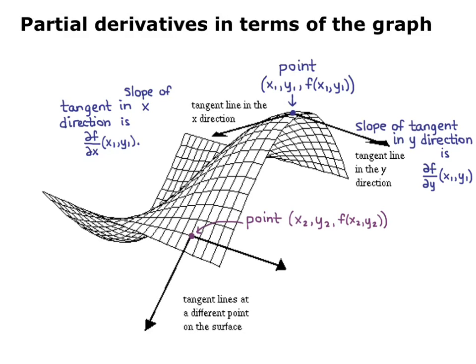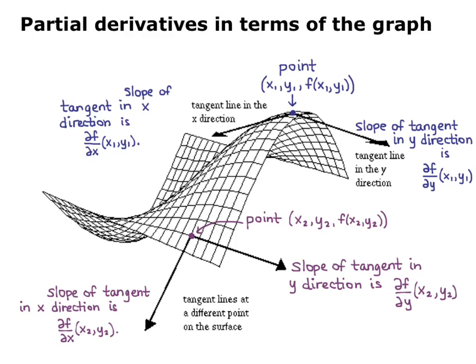If we take another point on the graph, x sub 2, y sub 2, and f of (x₂, y₂) — again with an x, y, and z value — then the slope of the tangent in the y direction is partial f partial y of (x₂, y₂), and the slope of the tangent in the x direction is partial f partial x of (x₂, y₂). So at different points on our graph we would have different values of our partial derivatives, although our way of calculating them will be the same based on our function.